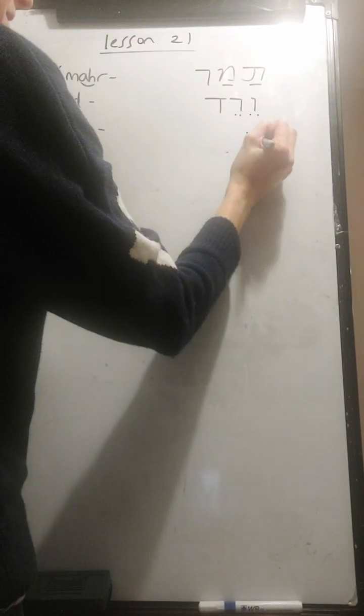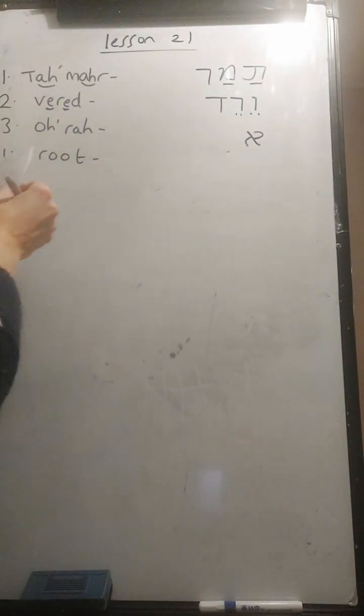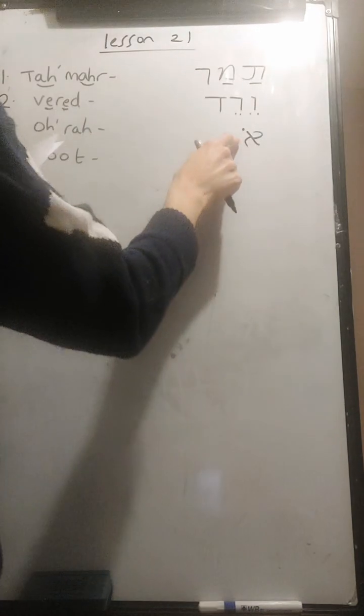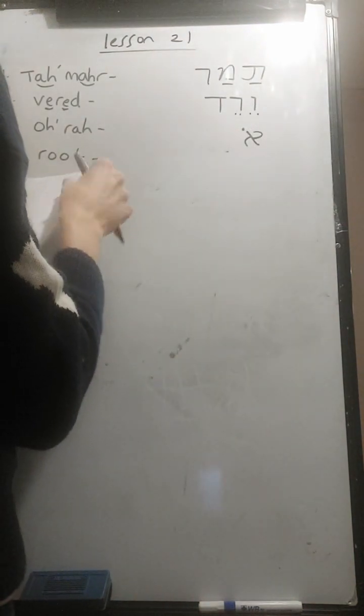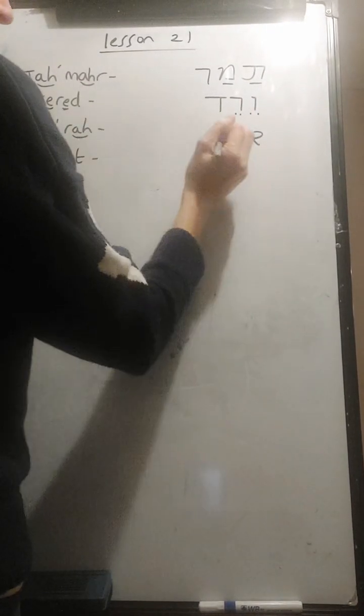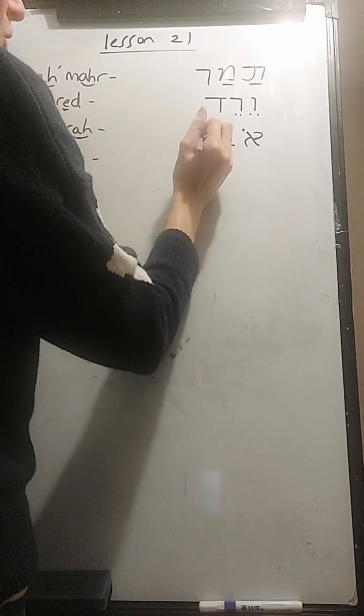Ora. We need a silent letter to start. So we'd use the alef. And we could either put the O to the top or we could use the vav with the dot. And then we need ORA. So we need R to get the R sound. And we'd close it with a he.